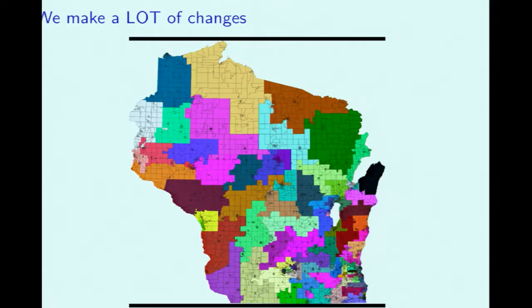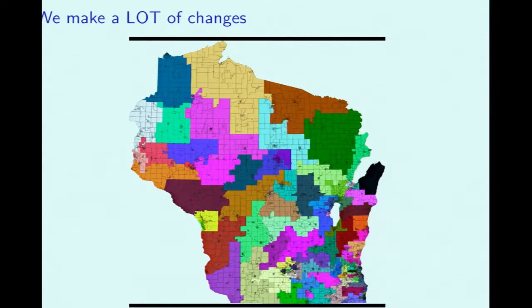When we do that, the thing we pay attention to is how many of these maps that we see are as bad as the first map. The idea is: we start with our map, we make the sequence of changes, and we look to see — does making these small random changes to the map make it fairer?